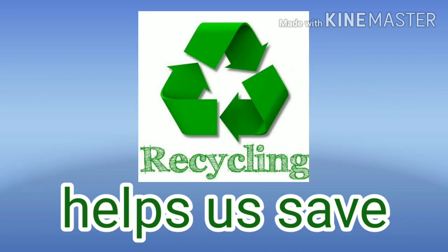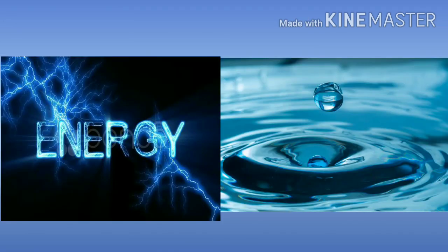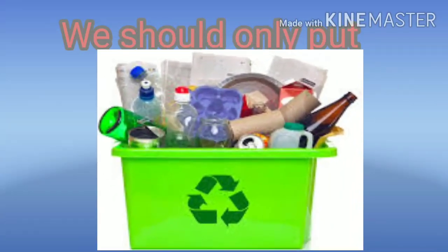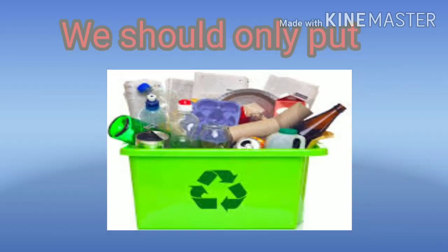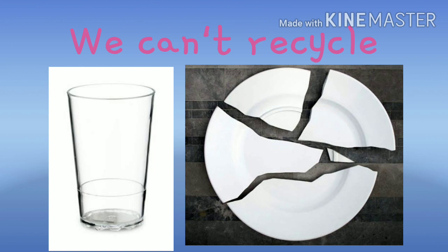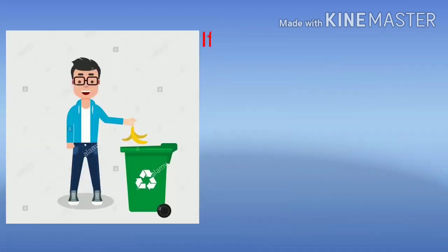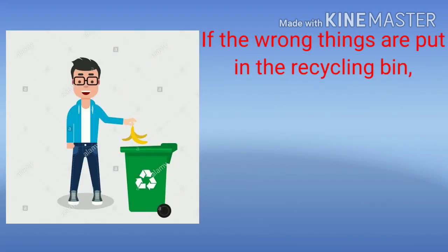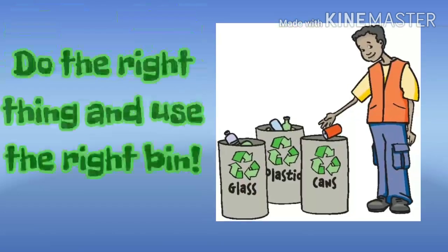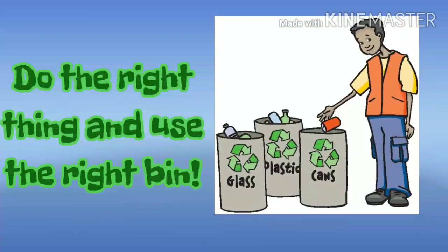Recycling helps us save energy, water, sand, and trees. We should only put plastic bottles, plastic containers, cans, tins, glass bottles, paper, and cardboard in the recycling bin. We can't recycle drinking glasses, broken plates, and cups. If the wrong things are put in the recycling bin, we waste a lot of time sorting it out. So do the right thing and use the right bin.